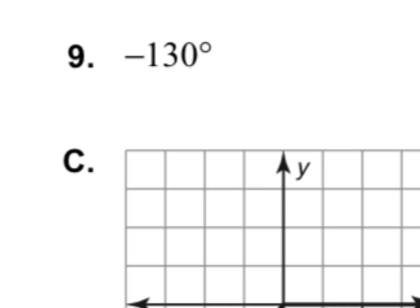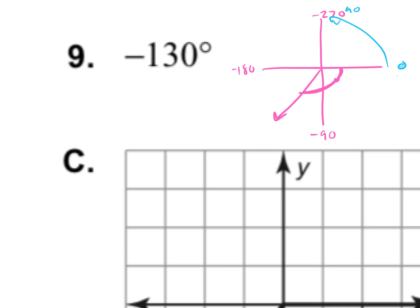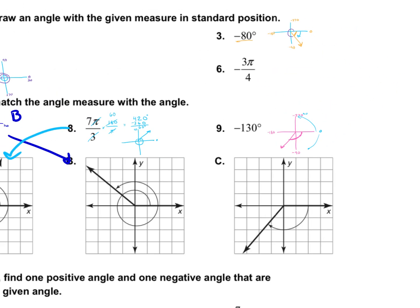For number 9, we have negative 130 degrees. Negative means we go in the opposite direction — instead of going up, we start going down. Change your axis labels to negative 90, negative 180, negative 270. We end up in the third quadrant, in the bottom left, between negative 90 and negative 180. That matches answer C.